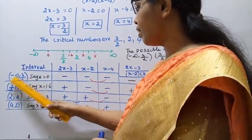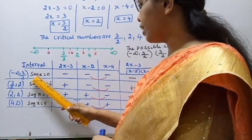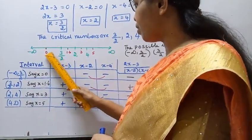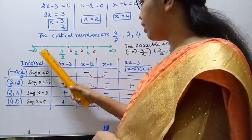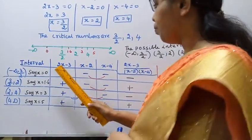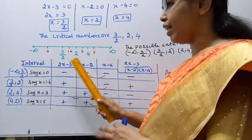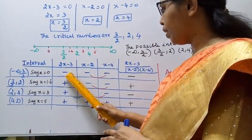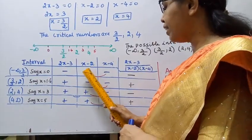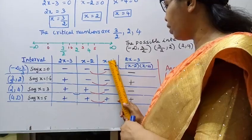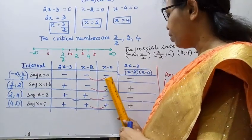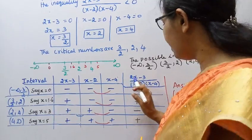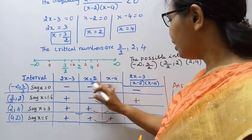For the interval minus infinity to 3/2, take x = 0. Then 2(0)-3 = -3, sign is minus. 0-2 = -2, sign is minus. 0-4 = -4, sign is minus.